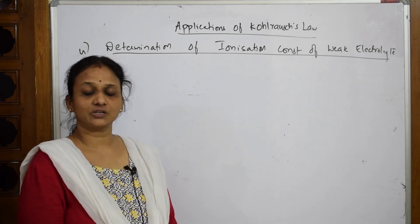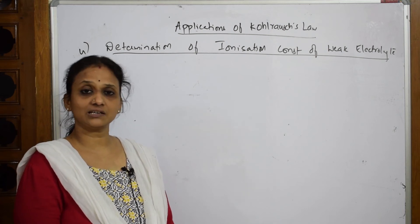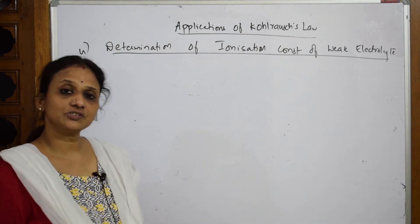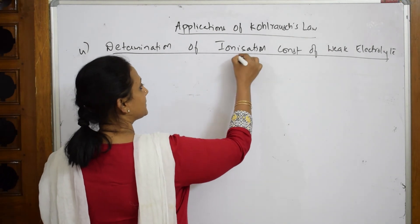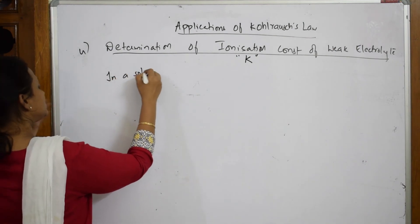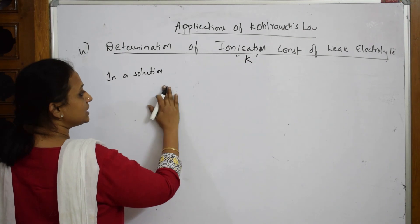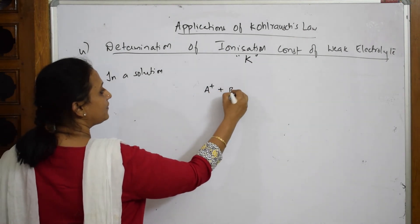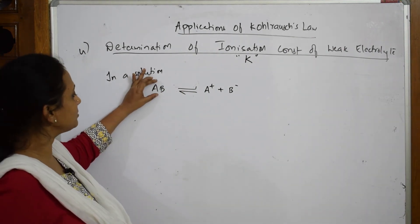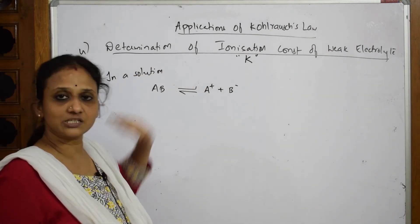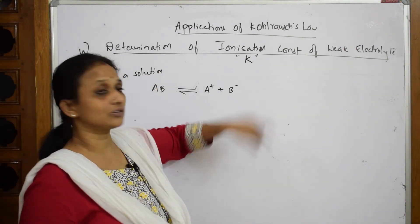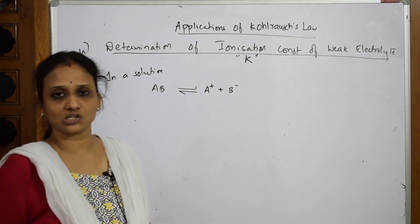The third application is finding the ionization constant of a weak electrolyte, denoted by K. In a solution, there is always an equilibrium between the unionized part and the ionized part — the cations, anions, and the undissociated molecule all coexist in equilibrium.